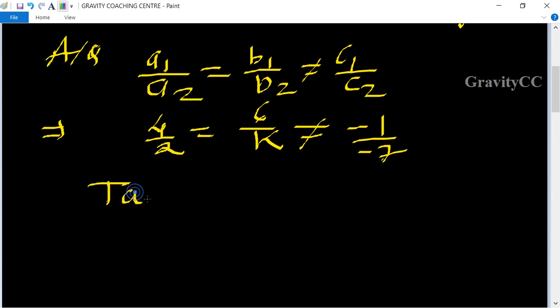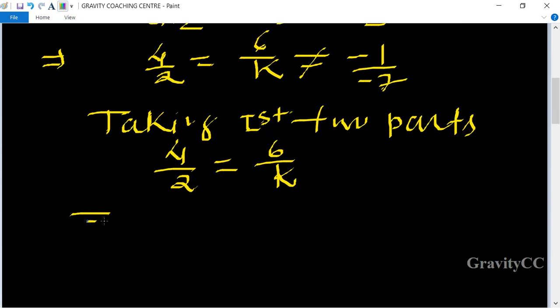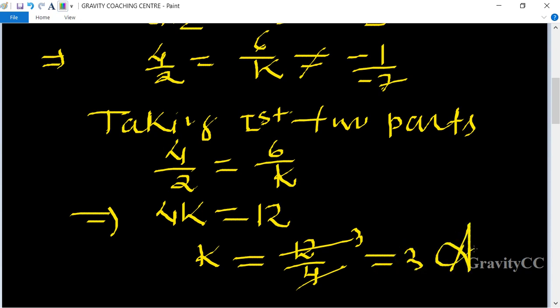Taking the first two parts: 4/2 = 6/k. After cross multiplication, we get 4k=12, so k=12/4, and 12 divided by 4 is 3, which is the required answer.